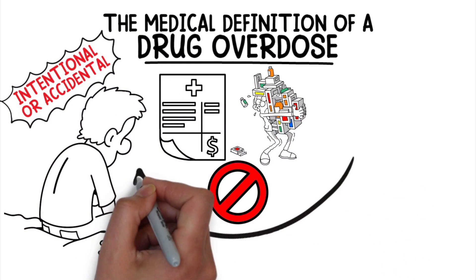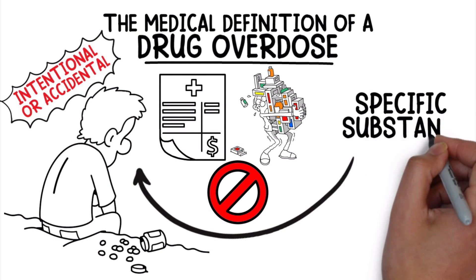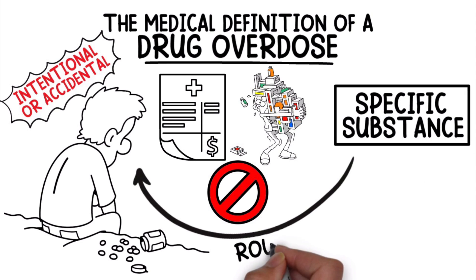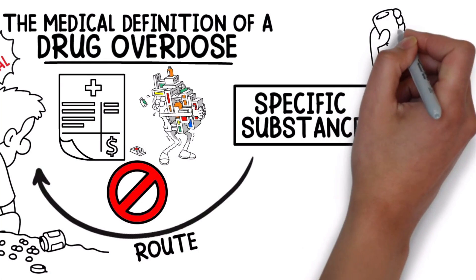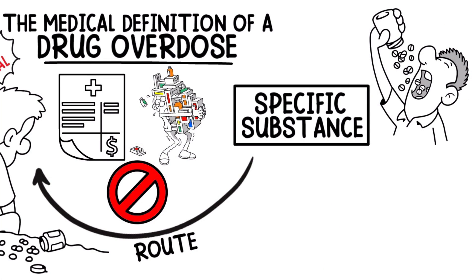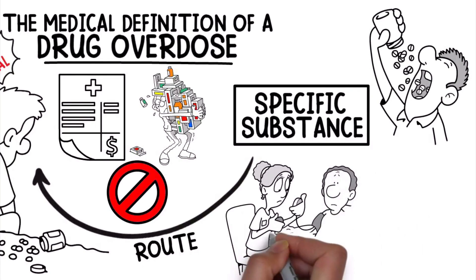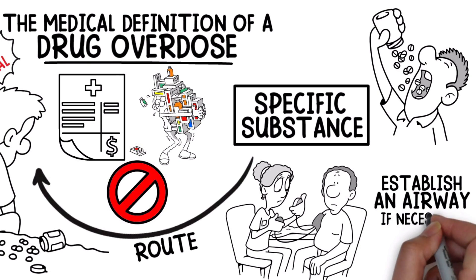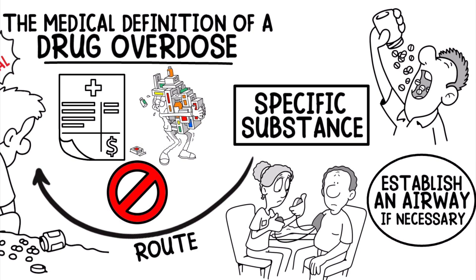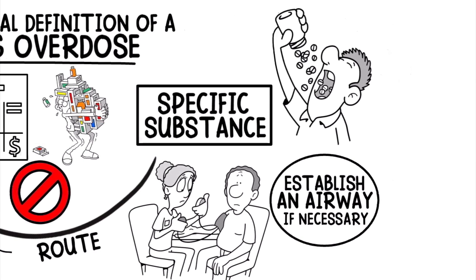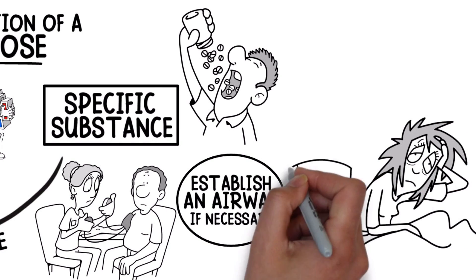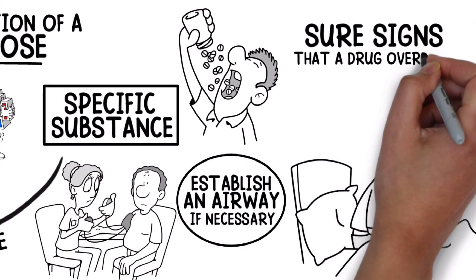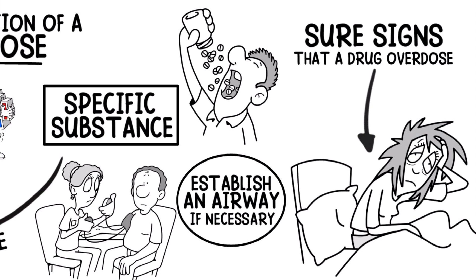The symptoms of a drug overdose depend on the specific substance involved, as well as the route by which it enters the body. Because of this variability, the most important thing to do as a respiratory therapist is to stabilize the patient and establish an airway if necessary. You may notice that the patient has slow or shallow breathing, along with an altered level of consciousness — these are sure signs that a drug overdose may be present.